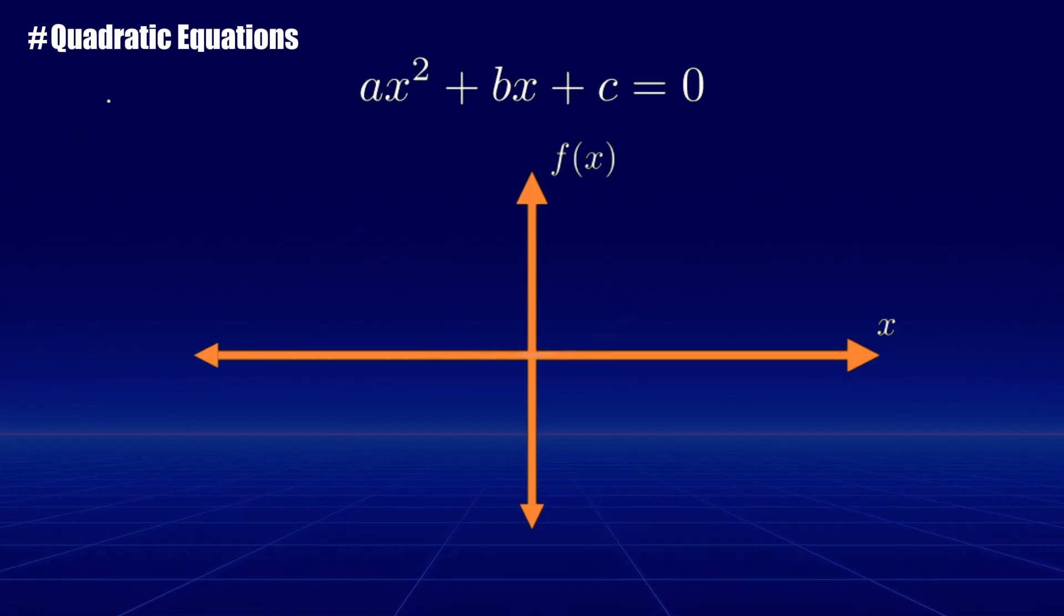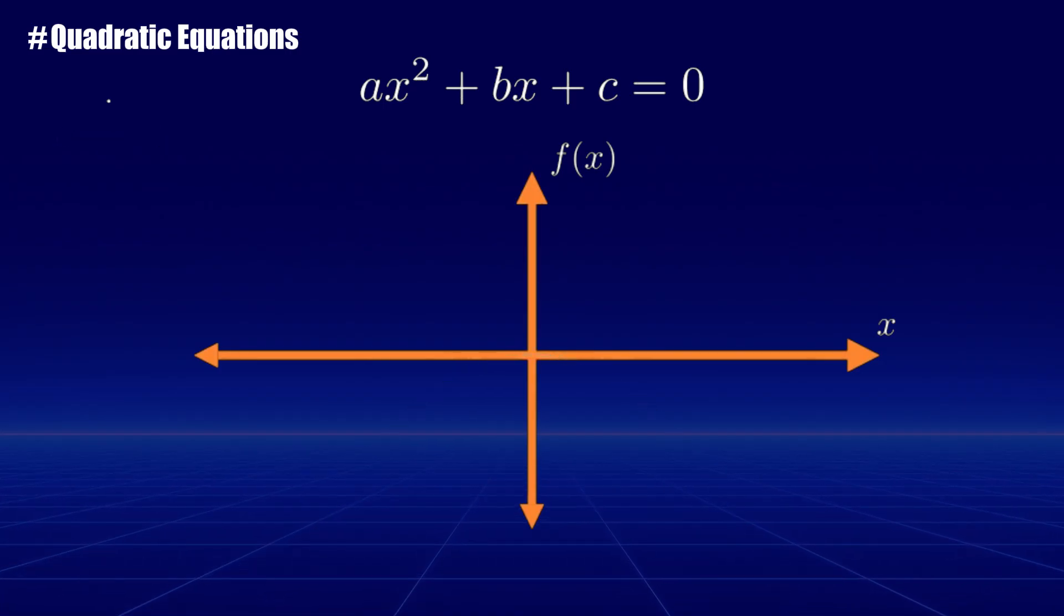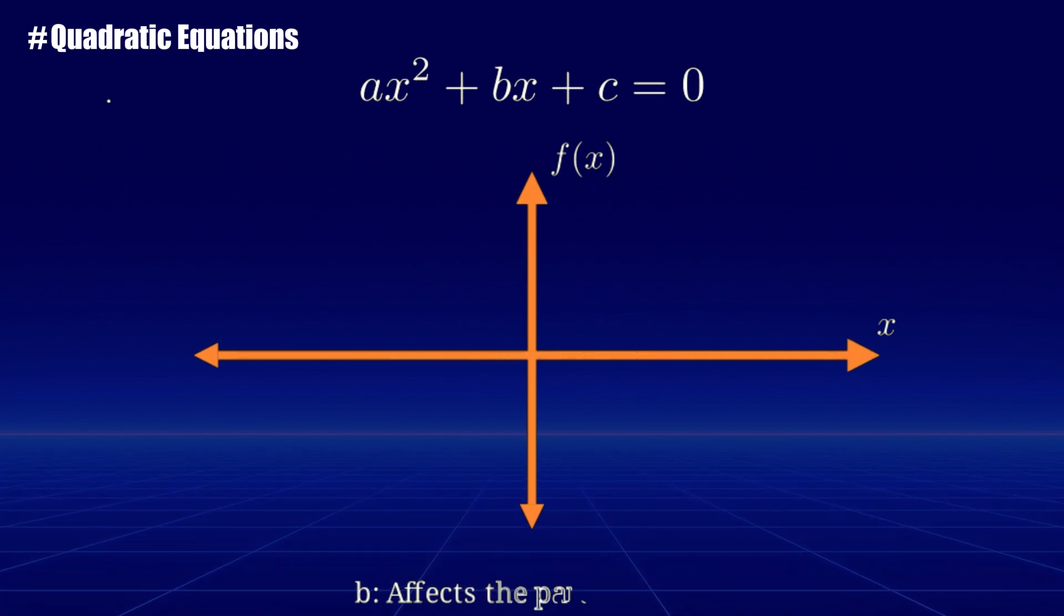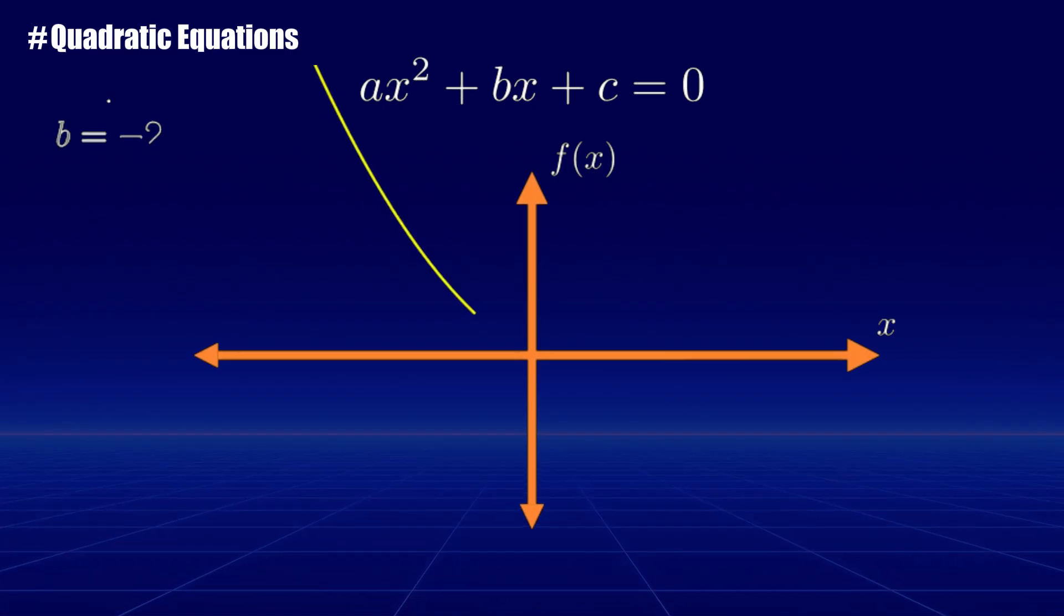Also, the larger the absolute value of a, the narrower the parabola. The term b influences the tilt, or how the parabola shifts along the x-axis.